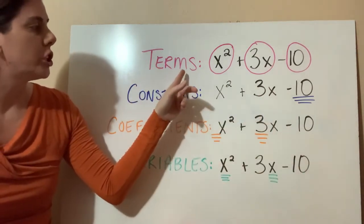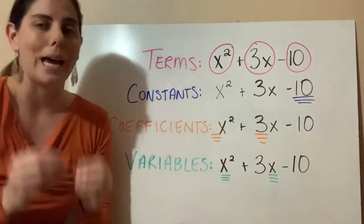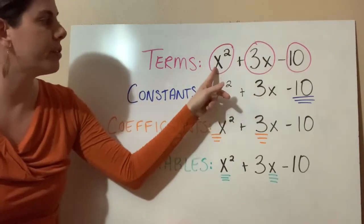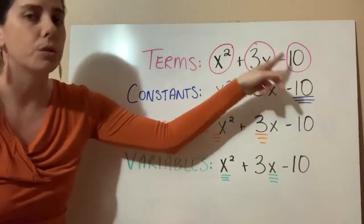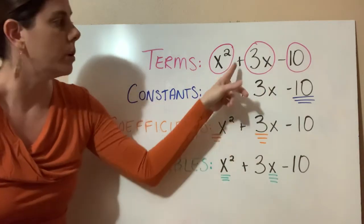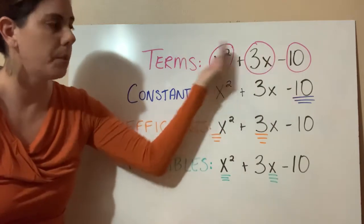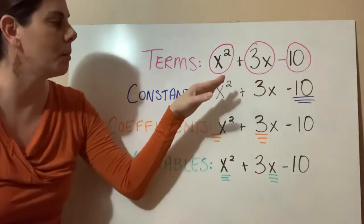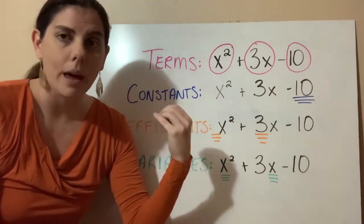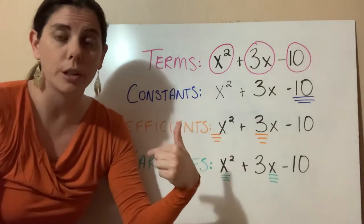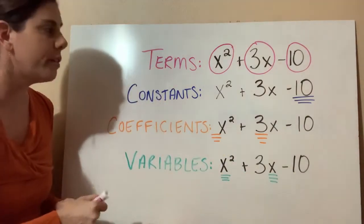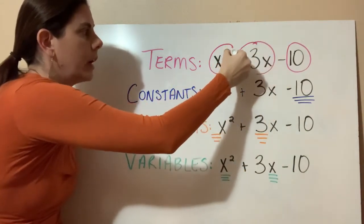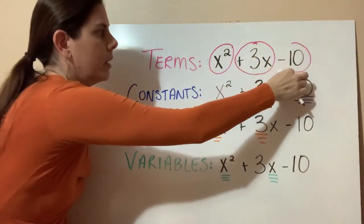Our first word is a term. A term is anything that's separated by a plus or a minus sign. So in this expression, we have three terms because there are two addition and subtraction signs — those signs are separating the terms. I went ahead and circled these terms so that you can kind of pick them out.